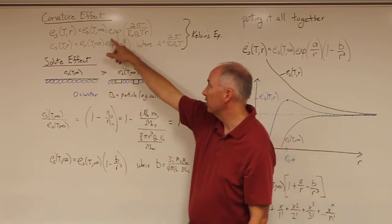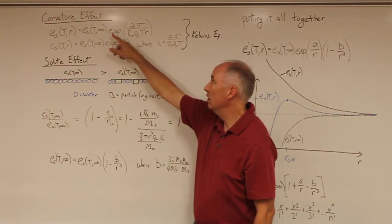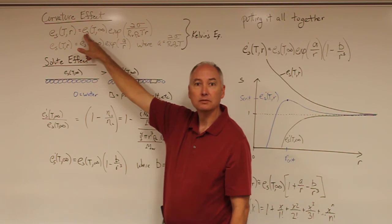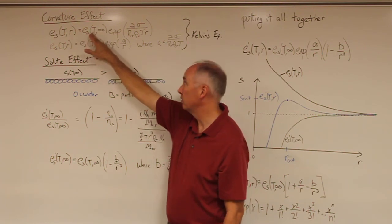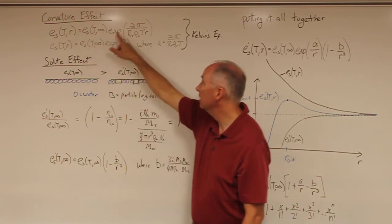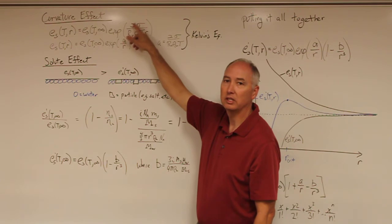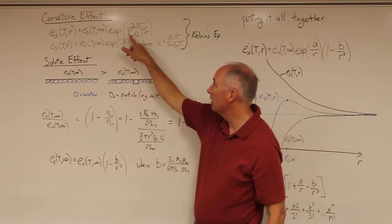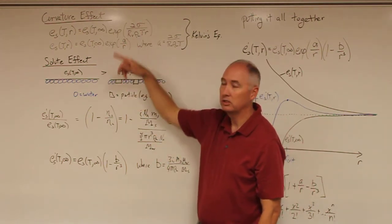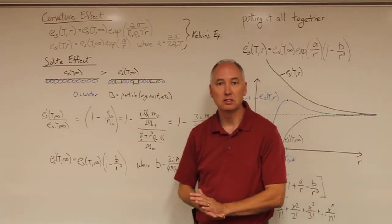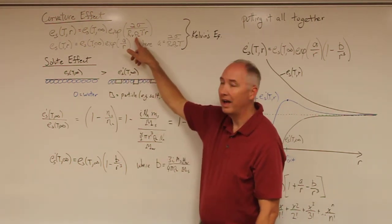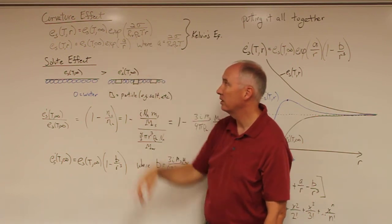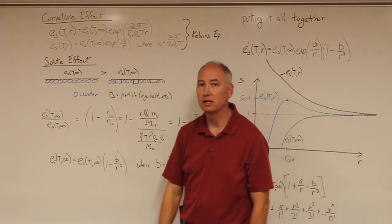That's denoted by this exponential function, where you have a correction factor for the saturation vapor pressure over a plain surface of pure water. This correction factor is 2 times sigma, which is the surface tension of the water droplet, R sub V, which is the specific gas constant for water vapor, rho L, which is the density of liquid water, T is the temperature, and R is the radius of the droplet.